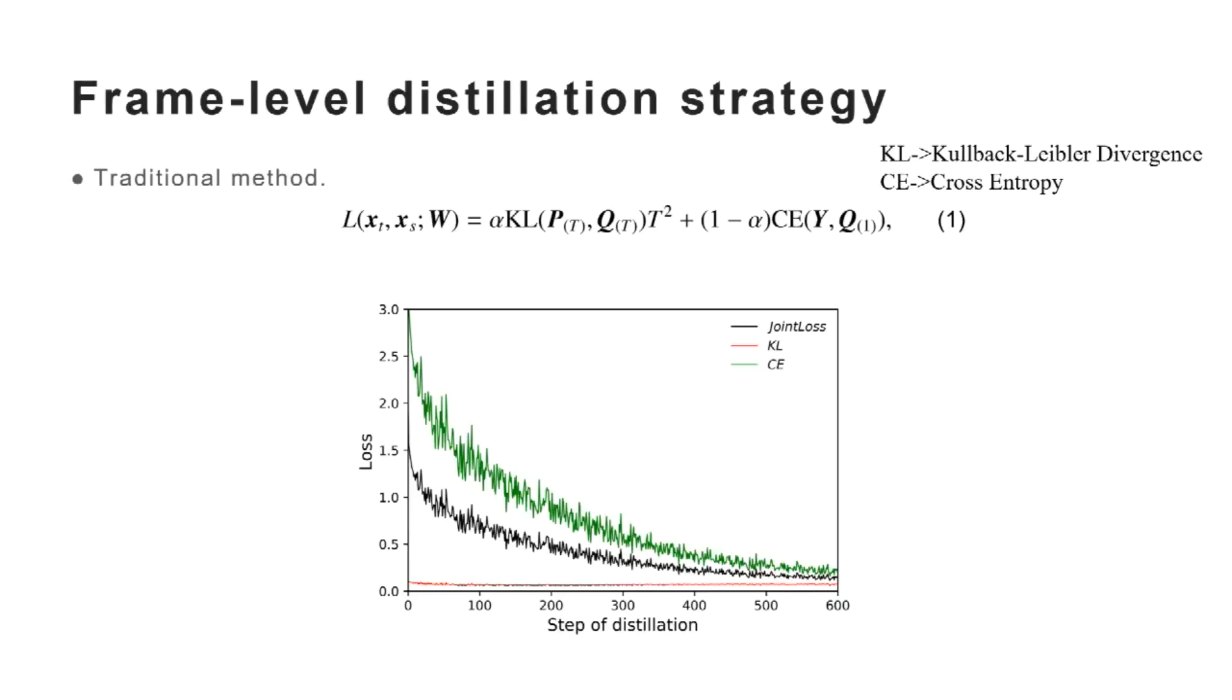For frame-level strategies, we tried a traditional method as equation 1, and we tuned temperature T and regularization parameter alpha manually to find a better model firstly. The loss reduction curve is shown in this figure when T is set to 1 and alpha is set to 0.5.